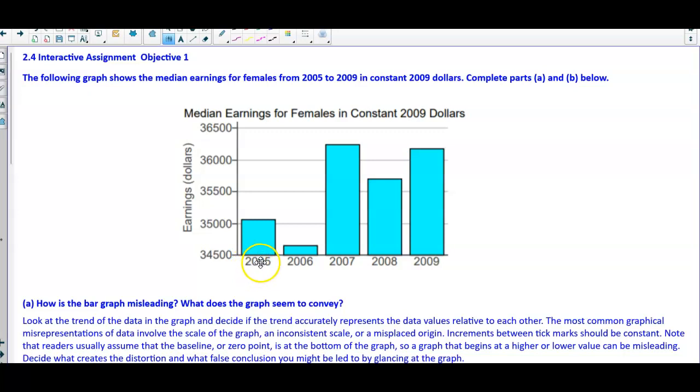If we take a look here, we have 2005, 2006, all the way to 2009. So this tells us the years. Now in the vertical axis, you can see that it starts at 34,500 and goes all the way up to 36,500. So where is zero located?